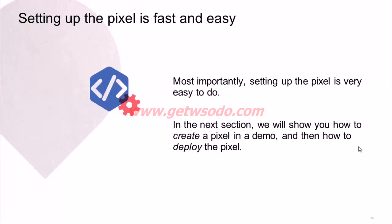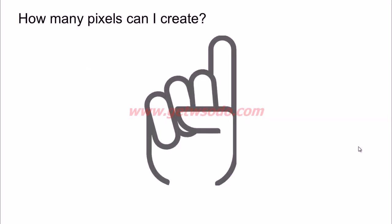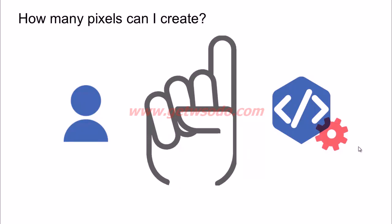So how do you set this pixel up? It is actually very simple. Before we go into setting up a pixel, one of the most important things you should know is that you can only create one pixel per ad account. So every ad account will have only one unique pixel — you cannot create more than one pixel for one single ad account.